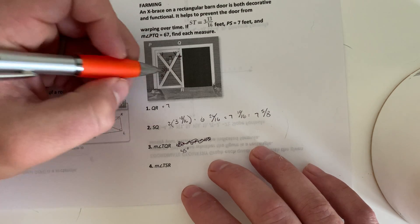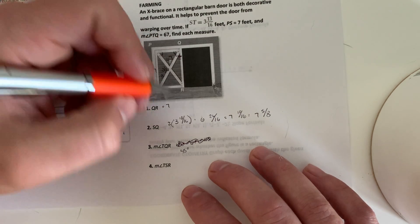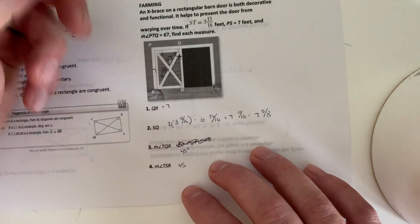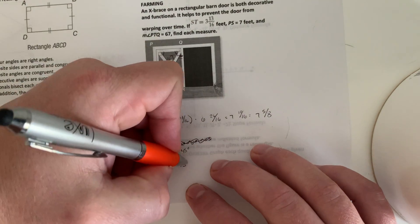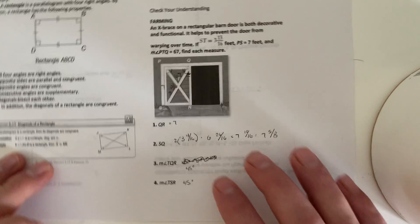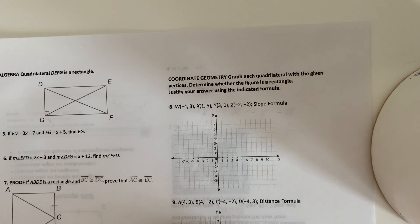And angle TSR. TSR would be 45 as well. Because again, the diagonal is bisected. So half of 90 is 45. All right.